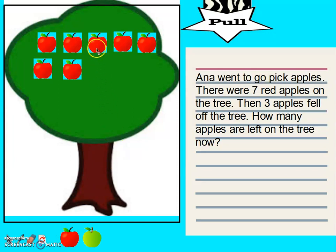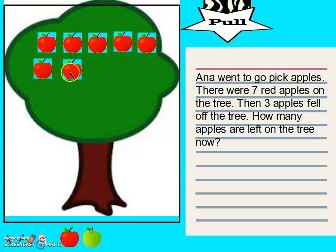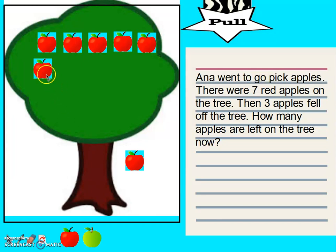Anna saw seven red apples on the tree. One, two, three, four, five, six, seven. That is the total number of apples. Then three fell off. One, two, three.